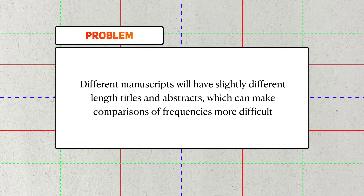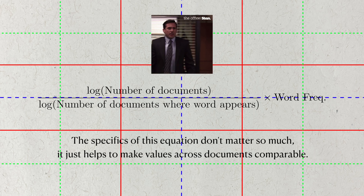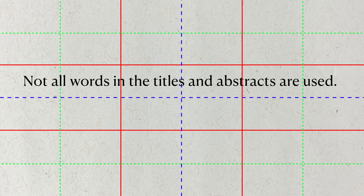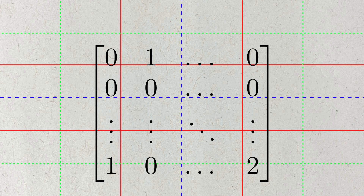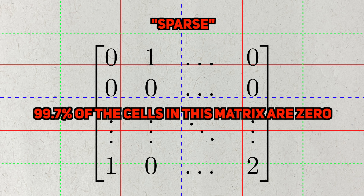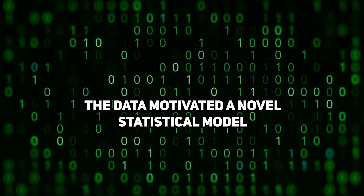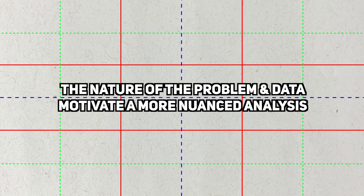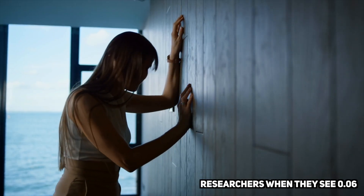But different manuscripts can have different lengths for their titles and abstracts. To make the numbers more comparable, the authors normalize the counts using the inverse document frequency. We don't need to worry about the specific definition here — the whole point is to make sure that the numbers are comparable by controlling for the number of documents and their lengths. Furthermore, the authors don't use all possible words; they remove common words and words that are too rare to contribute meaningfully to the analysis. One thing that's notable about this type of data is that it's inherently sparse — over 99% of the cells in the document-term matrix are zero, and this sparseness represents a major obstacle to the analysis. In response to this particular problem, the authors construct a novel statistical model to account for it. This is where statistics and biostatistics research is at its best: where the data motivates a more nuanced analysis.